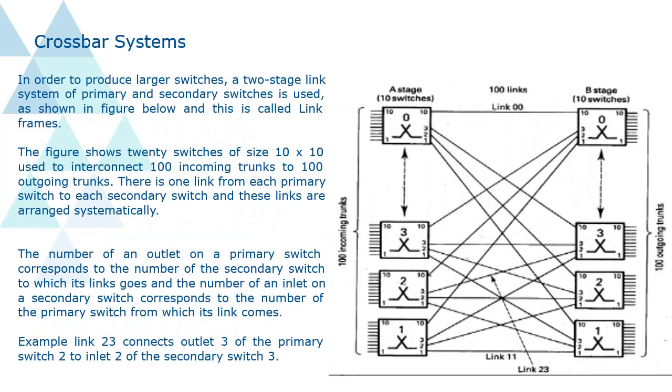In order to produce larger switches, a two-stage link system of primary and secondary switches is used, as shown in figure below and this is called link frames. The figure shows 20 switches of size 10 by 10 used to interconnect 100 incoming trunks to 100 outgoing trunks.